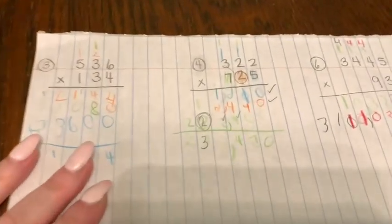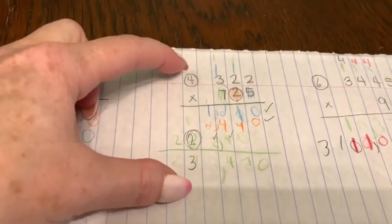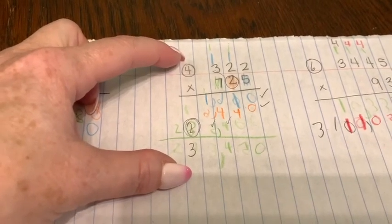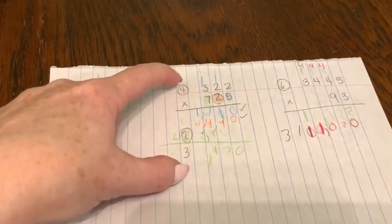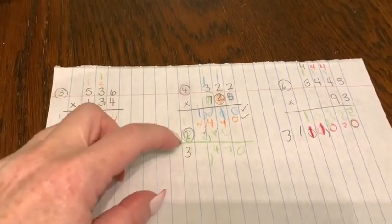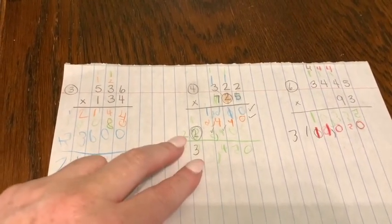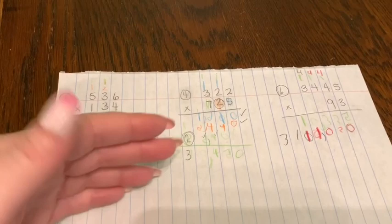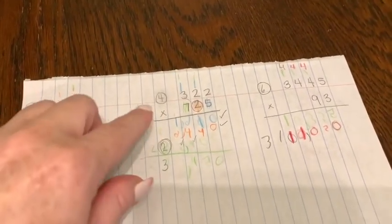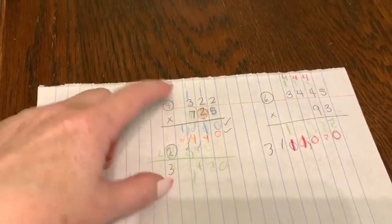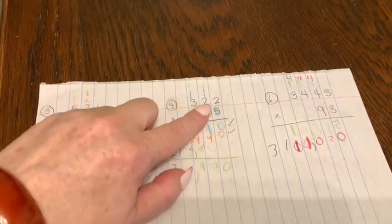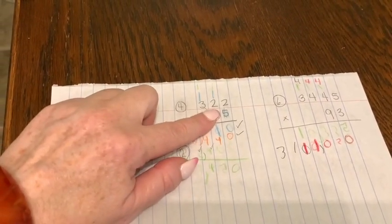What we do whenever we're checking - whenever my kid, especially when we're learning something new, gets a problem wrong - instead of just saying 'here you got this wrong, go fix it,' when it's something new like this we'll take it line by line and I pull out the calculator.